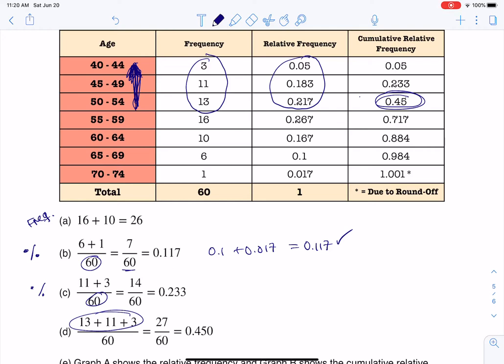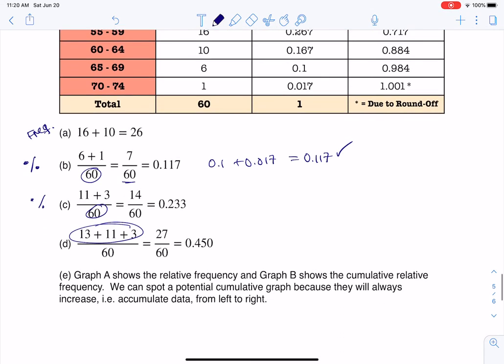And then it says, which graph shows the relative frequency and which graph shows the cumulative relative frequency? I don't have the graphs copied onto this homework solution, but graph A shows the relative frequencies and graph B is the cumulatives because you can see that cumulative graph is increasing. That's a giveaway that you're looking at a cumulative relative frequency graph rather than just a relative frequency.